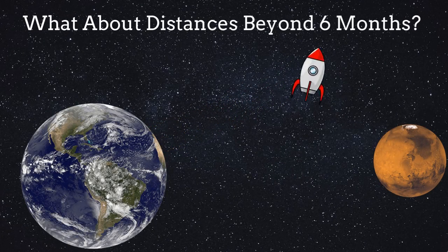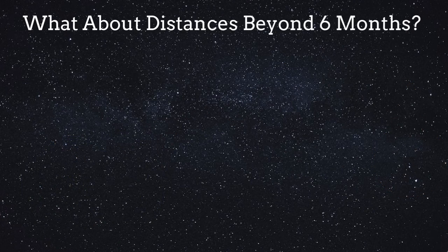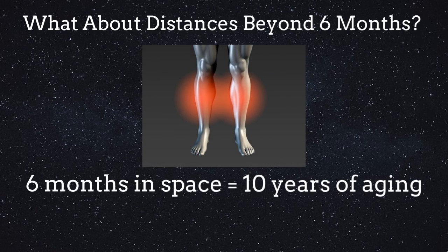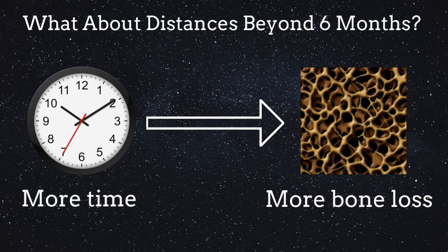So what about distances beyond six months, say two years, around the time it takes to go to Mars? One study did show that astronauts who had been in space longer than six months experience permanent bone loss in their shin bones equal to a decade of aging. However, the research is limited and there are not many studies in this area. We would expect that the effects would simply be worse than what they are for trips under six months, but it's hard to know for sure what the exact consequences would be.